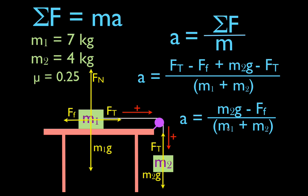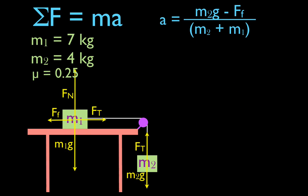Now I'm going to switch to the next slide, bringing the equation over. The acceleration equals M2g minus the friction force, divided by M1 plus M2. We know M2, g, and M1, but we need to calculate the friction force first. The friction force is μ times the normal force. Since the normal force equals M1g in magnitude, the friction force is μ times M1g, which is 0.25 times 7 times 9.8, giving a friction force of 17.15 newtons.